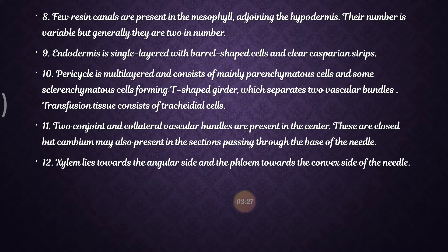The endodermis is single-layered with barrel-shaped cells and clear Casparian stripes. The pericycle is multicellular and consists mainly of parenchyma cells and some sclerenchyma cells forming a T-shaped girder. When you take the section of the needle, the T-shaped girder can easily be seen under the microscope, separating the two vascular bundles.